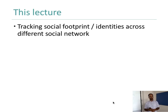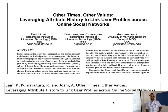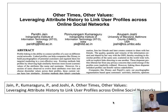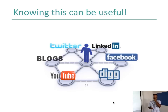So, the problem we look at is tracking social footprint identities across different social networks — finding out whether they are the same. As in past lectures, many of the topics I discuss are connected to research. Here is a paper I am going to discuss today: 'Other Times, Other Values: Leveraging Attitude History to Link User Profiles Across Online Social Networks.' A big advantage of actually knowing these connections is very useful.